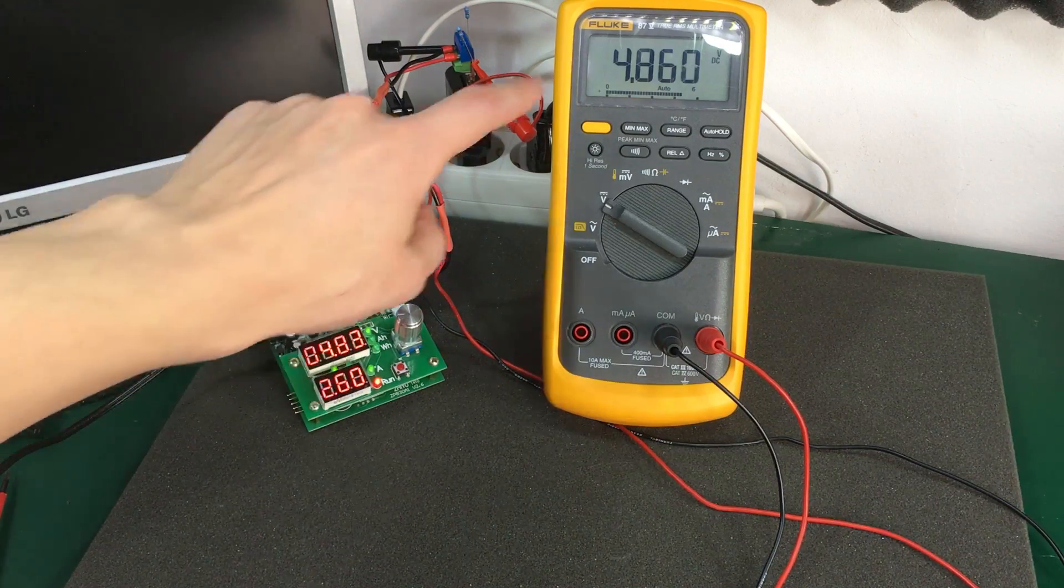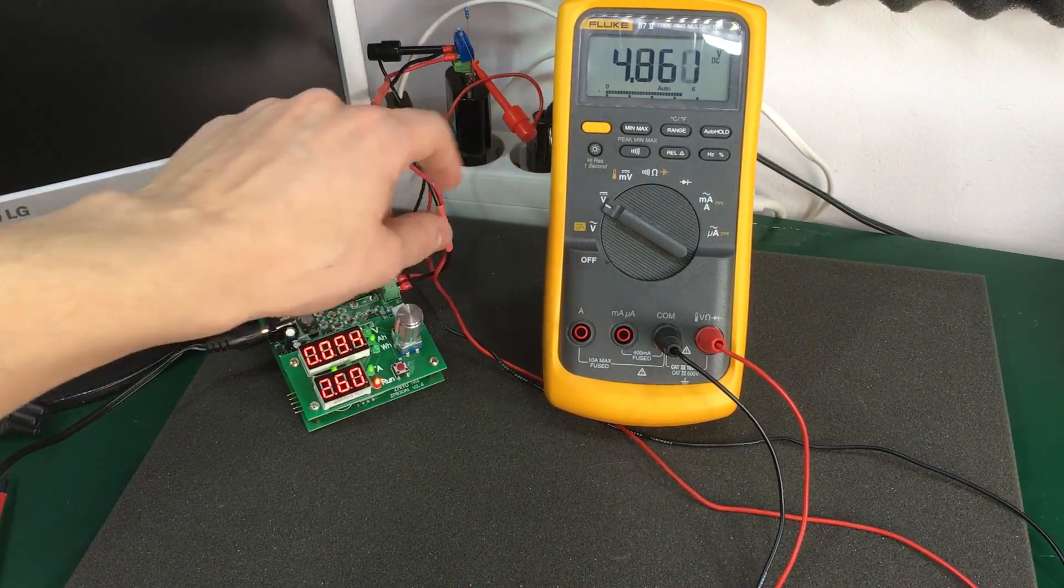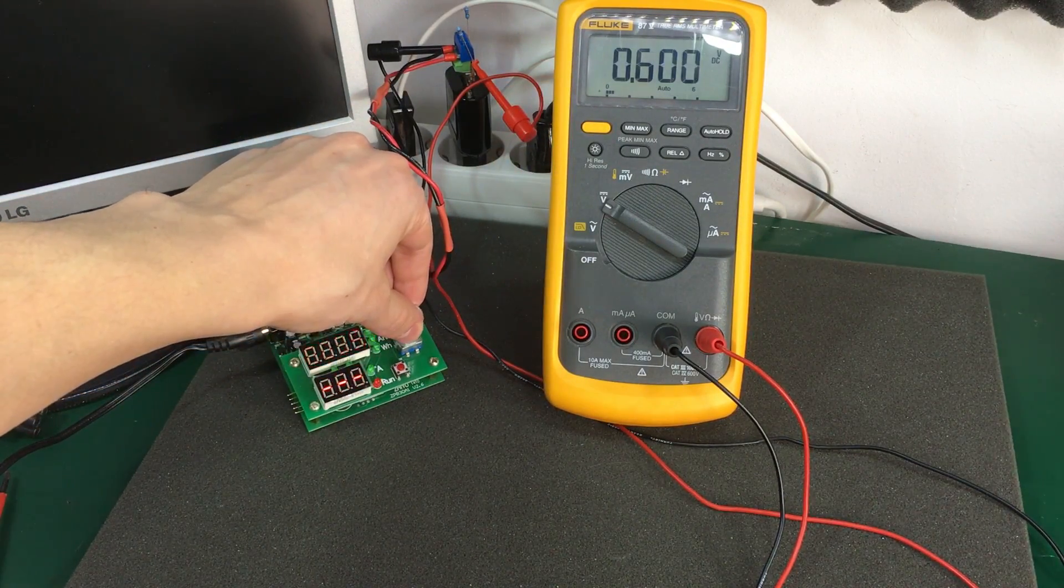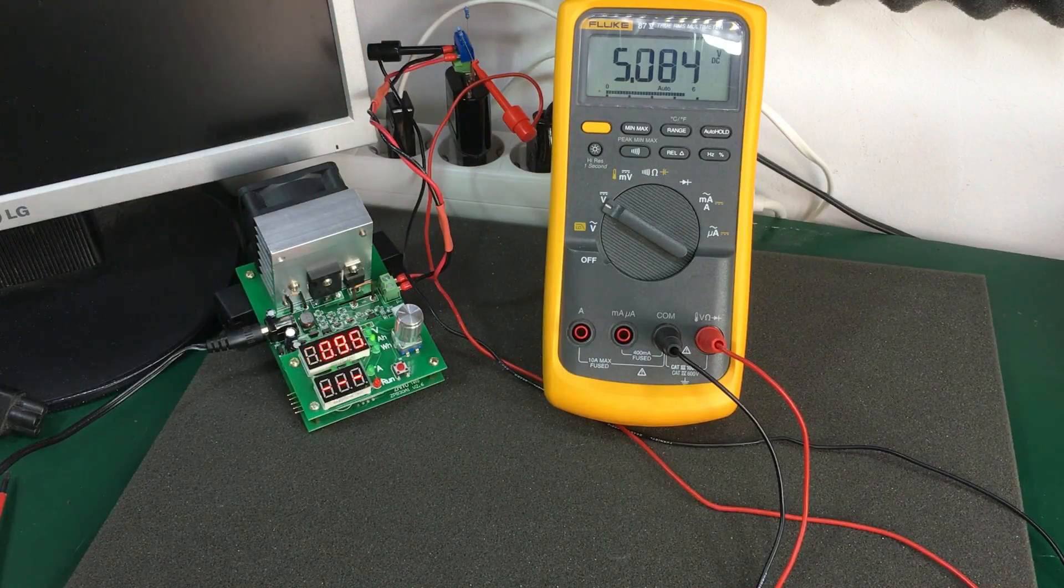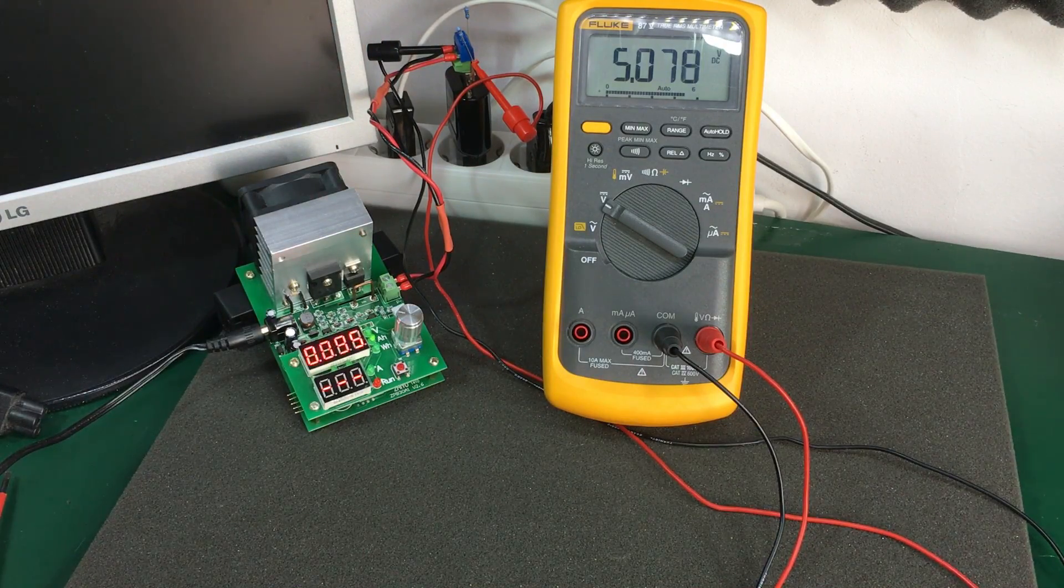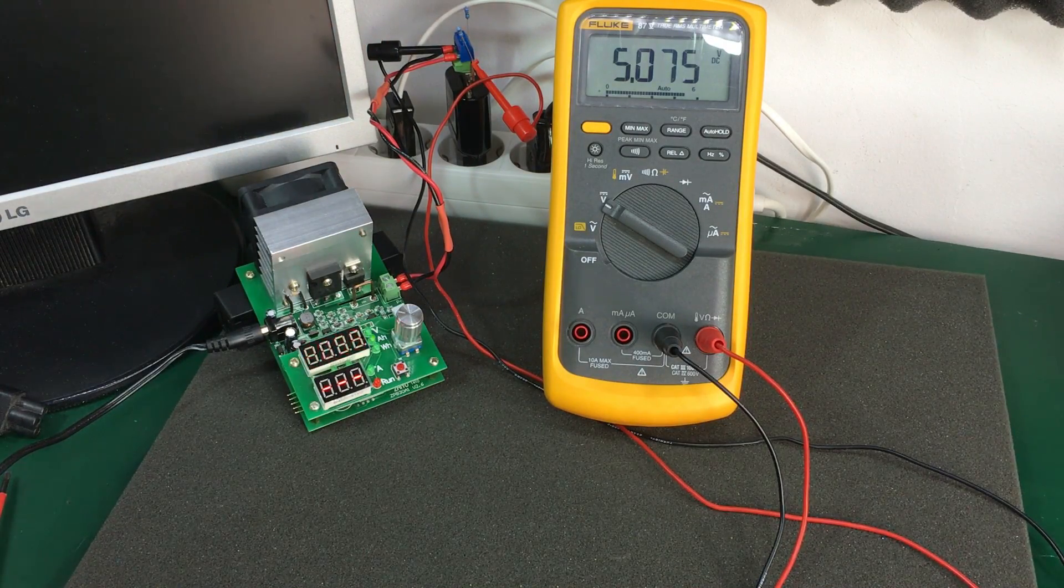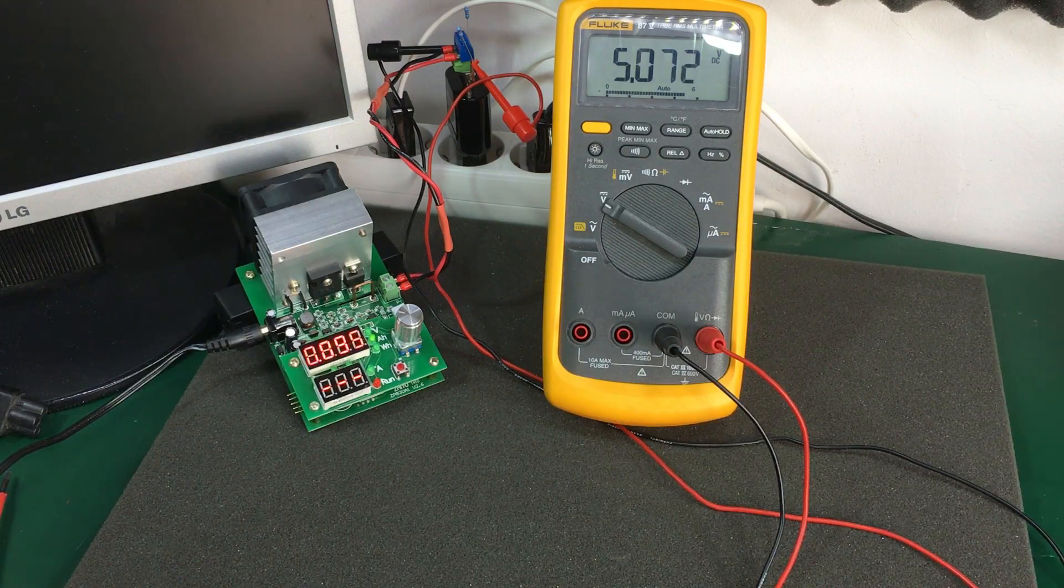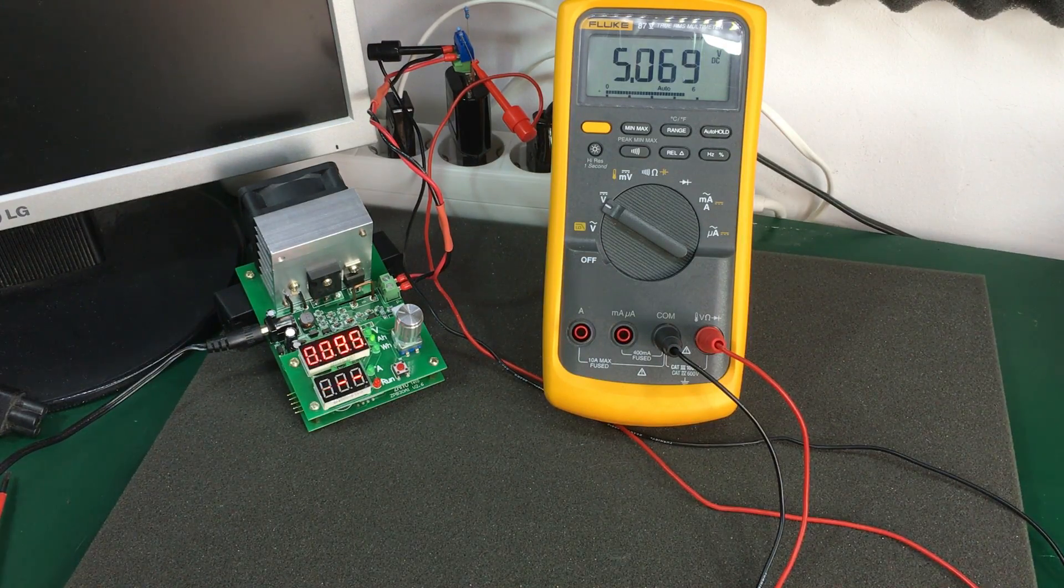At 2.6A we can see the output voltage dropping, and at 2.7A the overcurrent protection kicks in. So it has plenty of safety margin above the rated 2.1A.